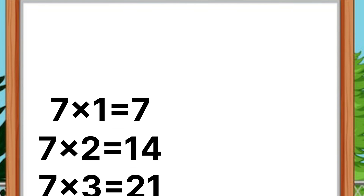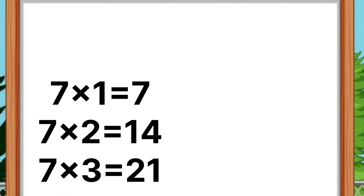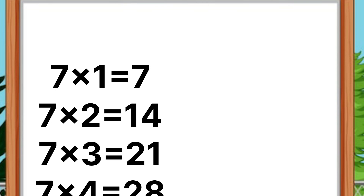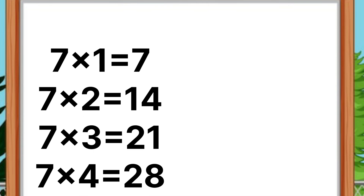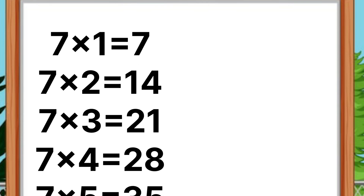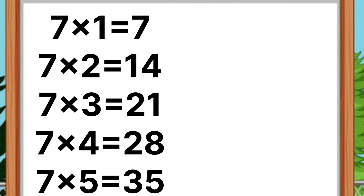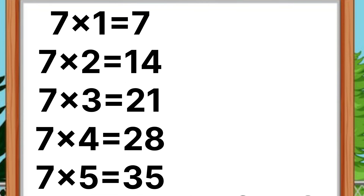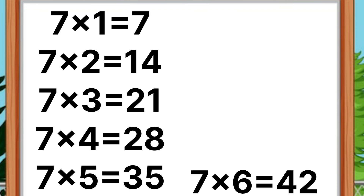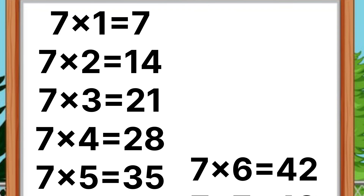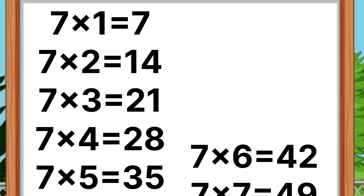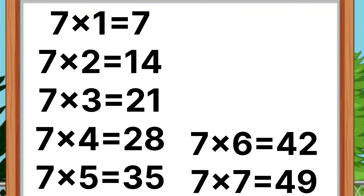Seven ones are seven. Seven twos are fourteen. Seven threes are twenty-one. Seven fours are twenty-eight. Seven fives are thirty-five. Seven sixes are forty-two. Seven sevens are forty-nine.